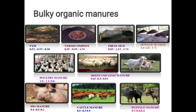NPK content of different organic manures: FYM contains 0.52% nitrogen, 0.33% phosphorus, and 0.38% potassium. Vermicompost contains approximately 0.55% N, 0.19% P, and 1.75% K. Pressmud (from sugarcane) contains 0.85% N, 1.15% P, and 1.74% K. Sewage and sludge contain 3% N, 2% P, and 1% K. Poultry manure contains about 1% nitrogen.